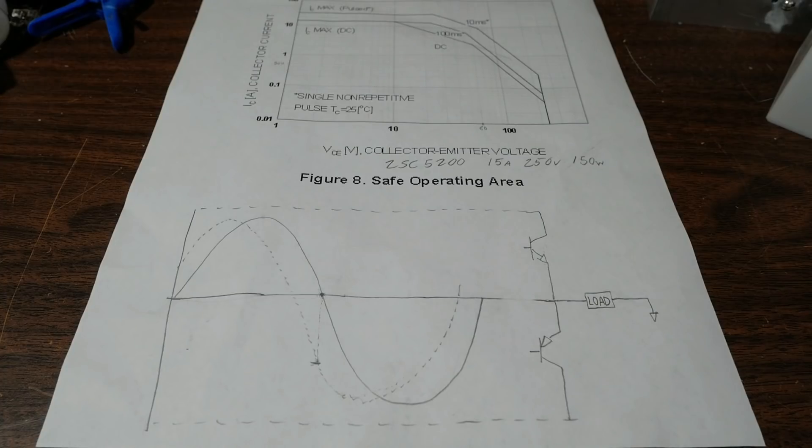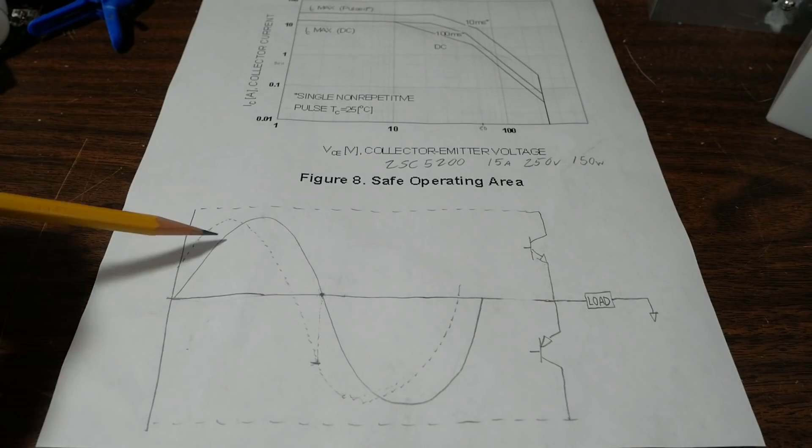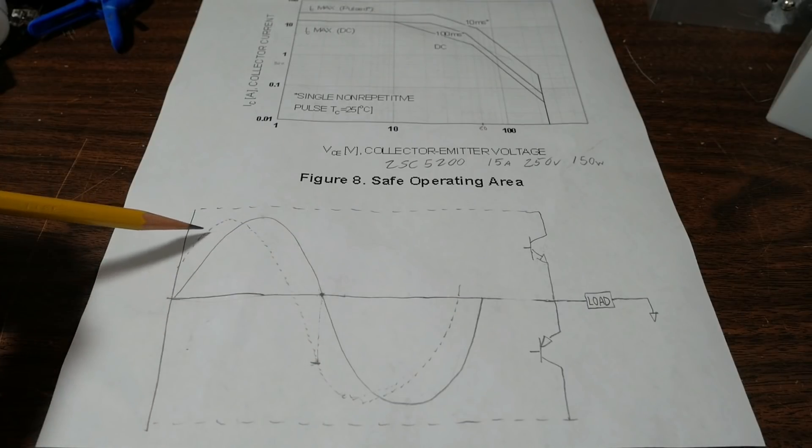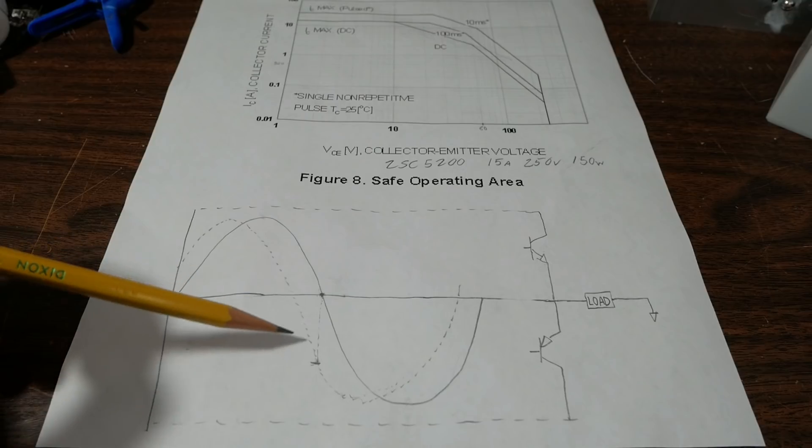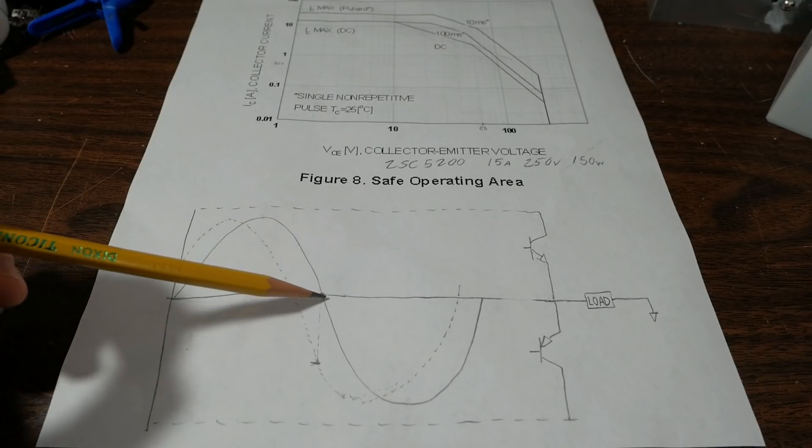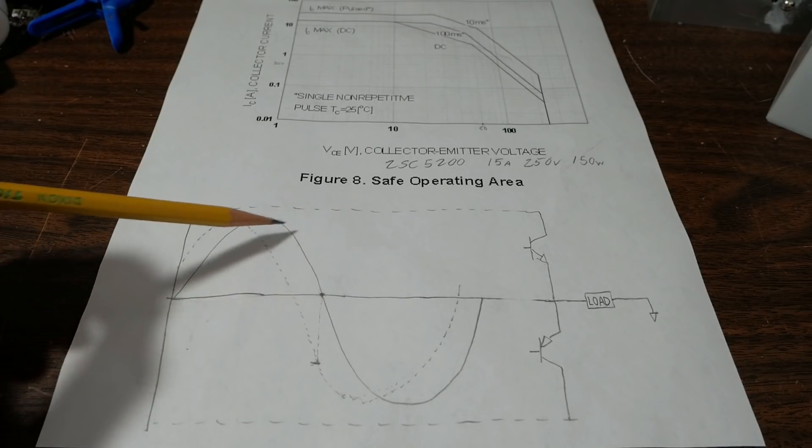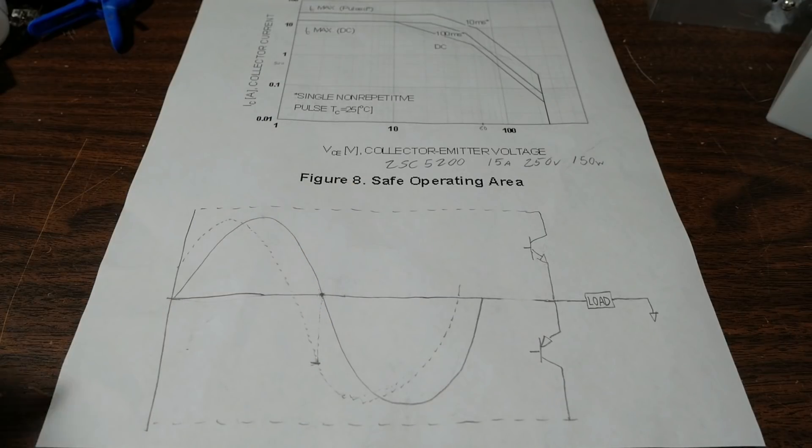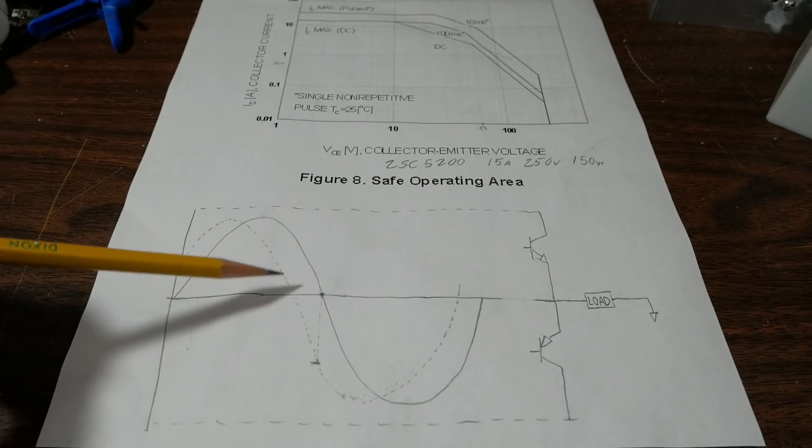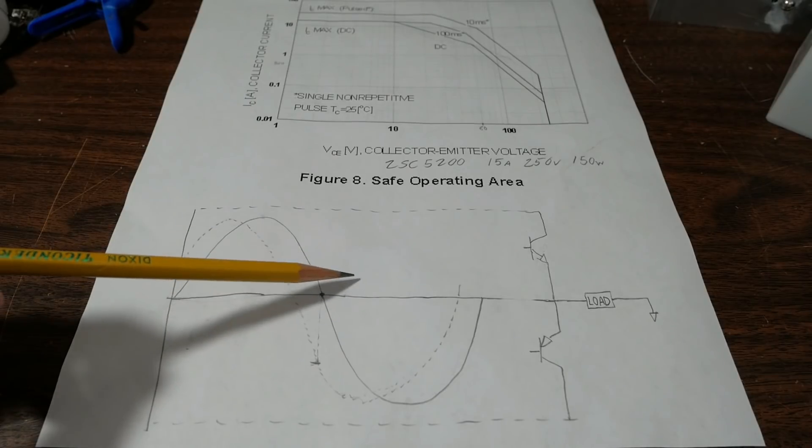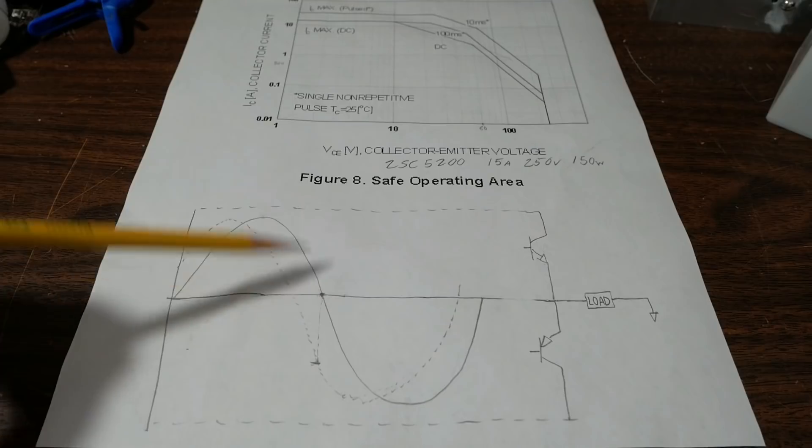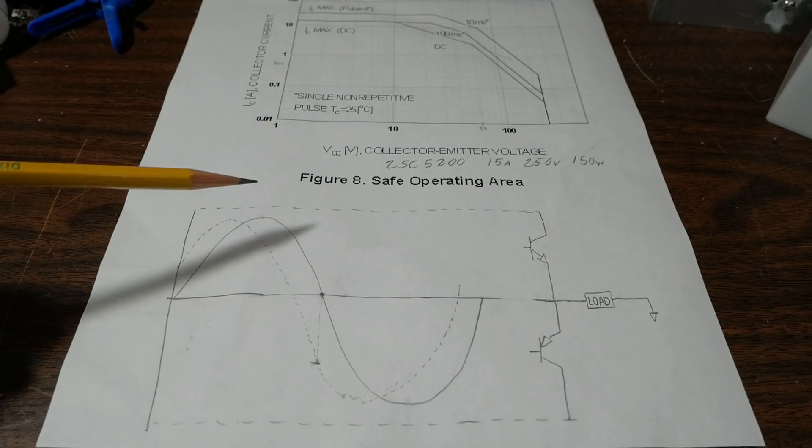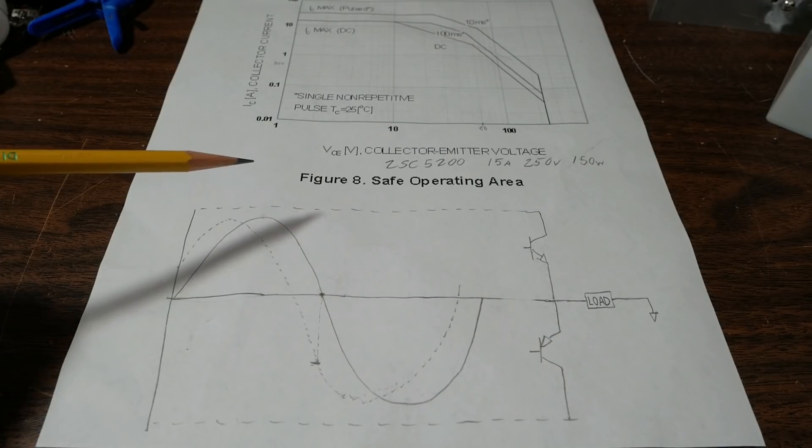Loudspeakers pose a reactive load to the amplifier's output. And you might be aware that with a reactive load, if it's inductive, the current waveform, which is dotted here, would lag behind the voltage waveform. And if it's capacitive, the current would lead the voltage waveform. And loudspeakers can meet all of these conditions. They could be inductive, capacitive, or even resistive, depending on the frequency they're operated at. And this could be problematic for the output transistors of the amplifier if they're not sized properly.